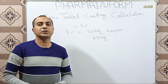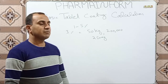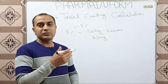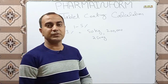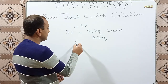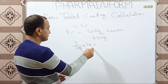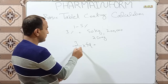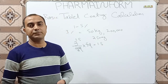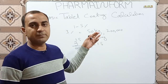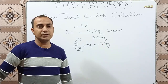If we want to calculate coating material for 50 kg and we want 3 percent coating material, the calculation is very simple. We calculate 3 percent of 50 kg: (3/100) × 50 = 1.5 kg. This means if we want 3 percent coating material for a tablet batch of 50 kg, we require 1.5 kg of coating material.